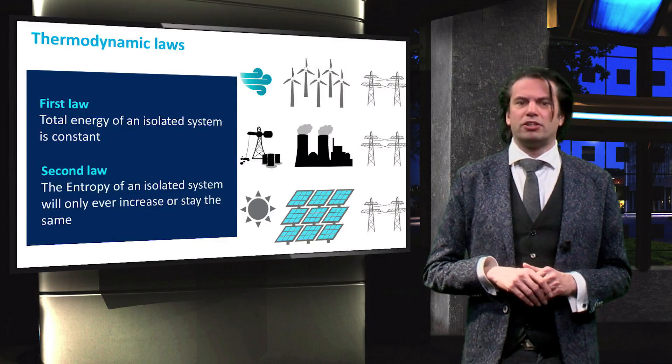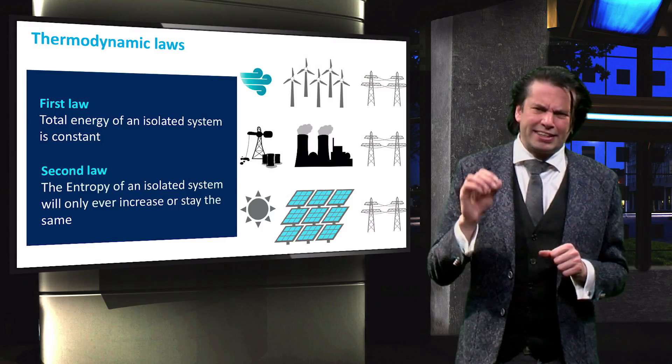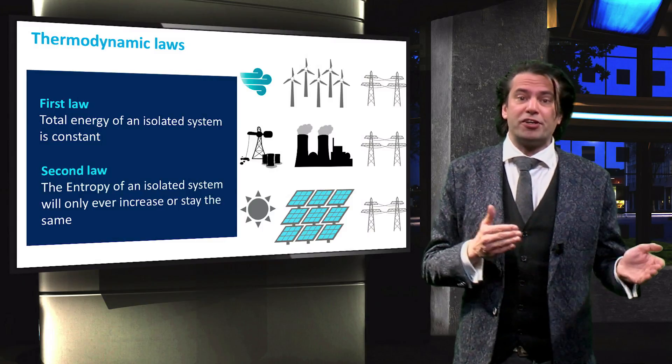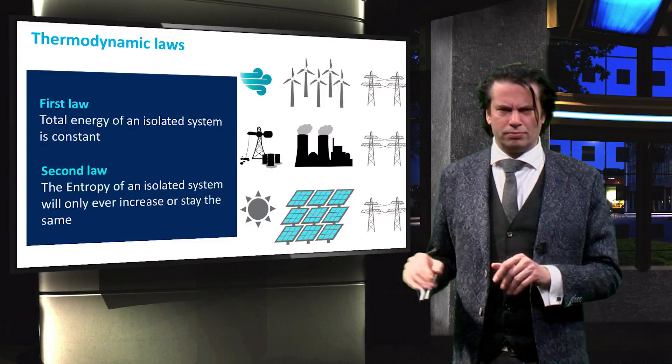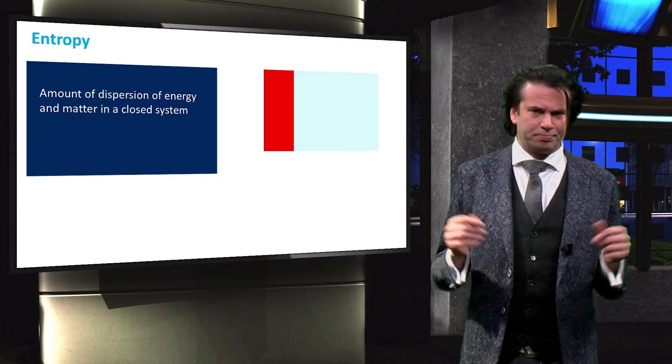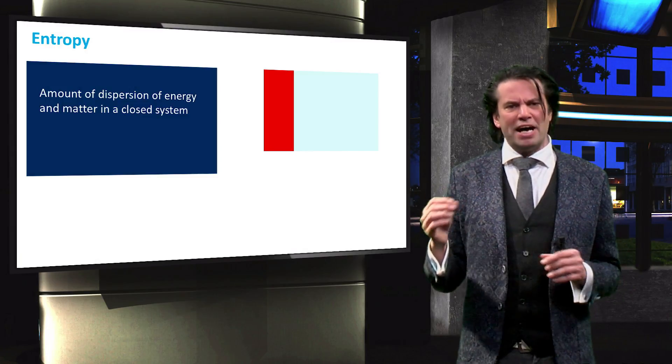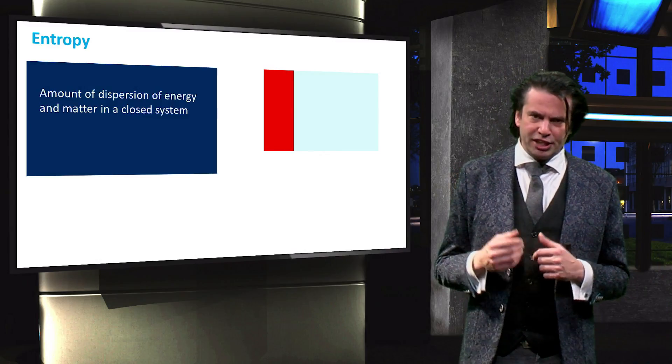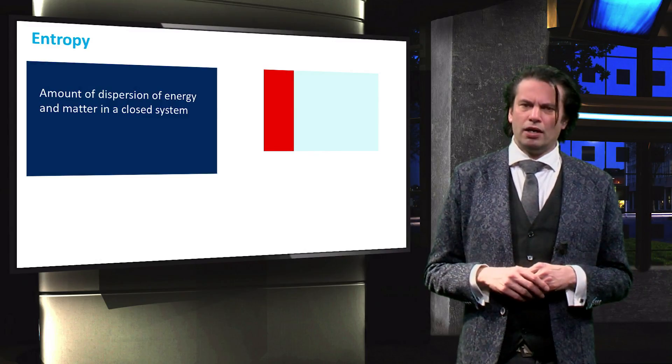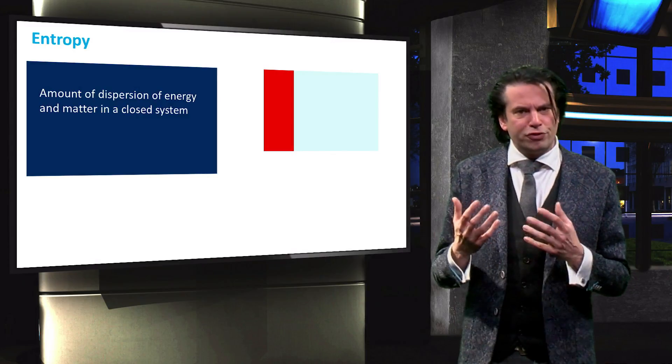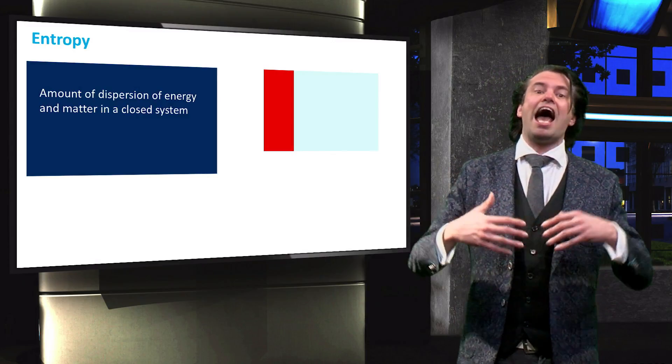The second law of thermodynamics, however, states that the entropy of a system can only ever increase or stay the same. So what exactly is the entropy of a system? The entropy is a measure of the amount of dispersion of matter and energy in a closed system. The fact that entropy only increases implies that the amount of dispersion will only ever increase.